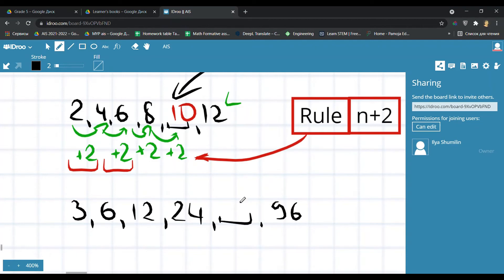3 to 6, how did it change? I guess maybe it's plus 3. What do you think, plus 3? If it's plus 3, it should be again plus 3. But here it's actually not plus 3. Maybe it's not only addition, maybe we should use something else.